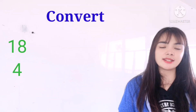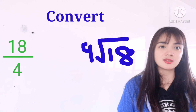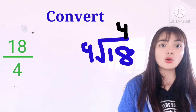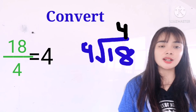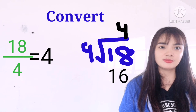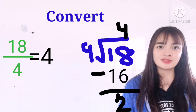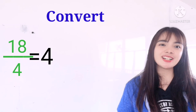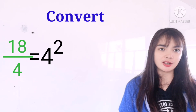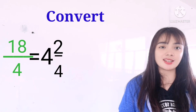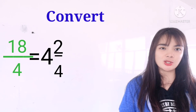How about 18 over 4? We need to divide 18 divided by 4, which is equivalent to 4. So 4 would be our whole number. Then 18 minus 16 is equivalent to 2. Our remainder is 2, so we put 2 as our numerator. Then we carry our denominator, which is 4. So the mixed fraction of 18 over 4 is 4 and 2/4.